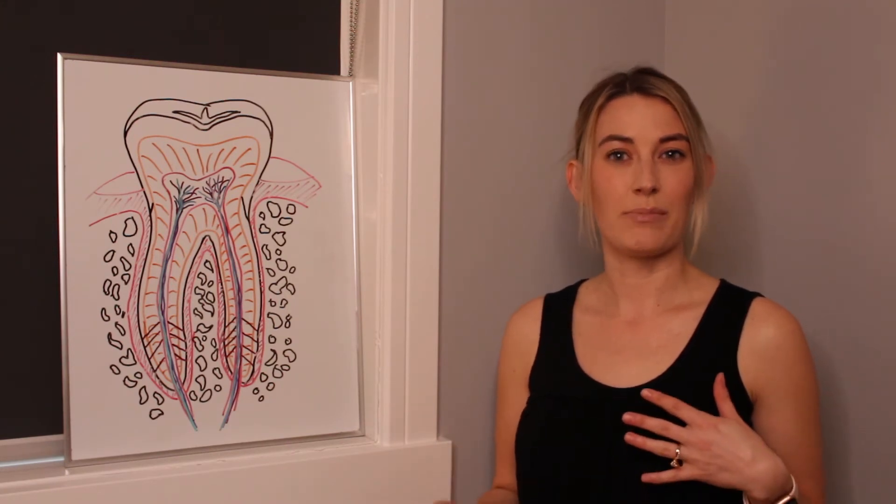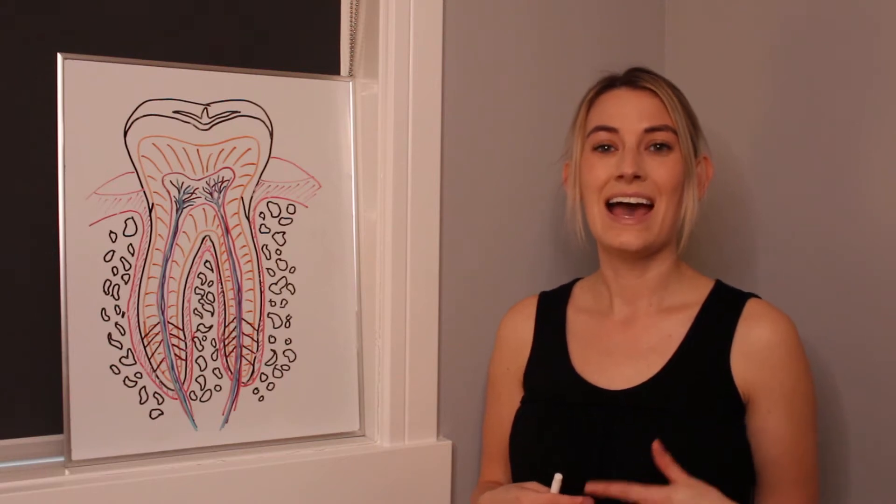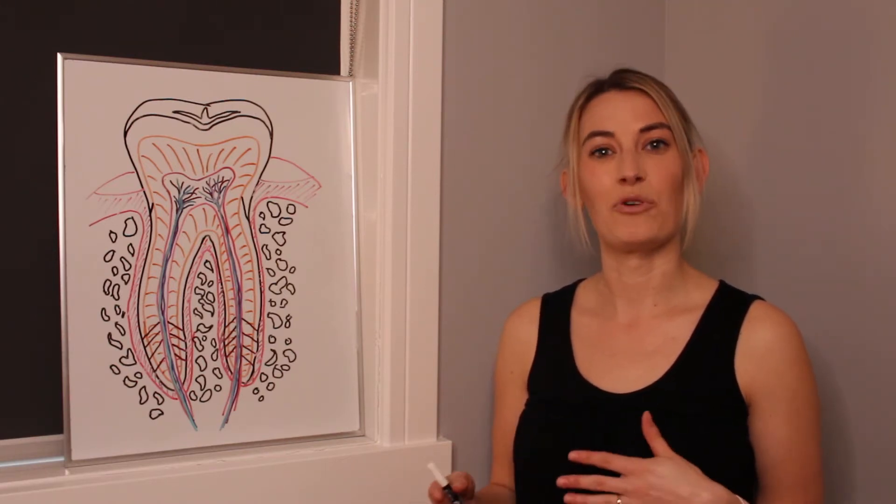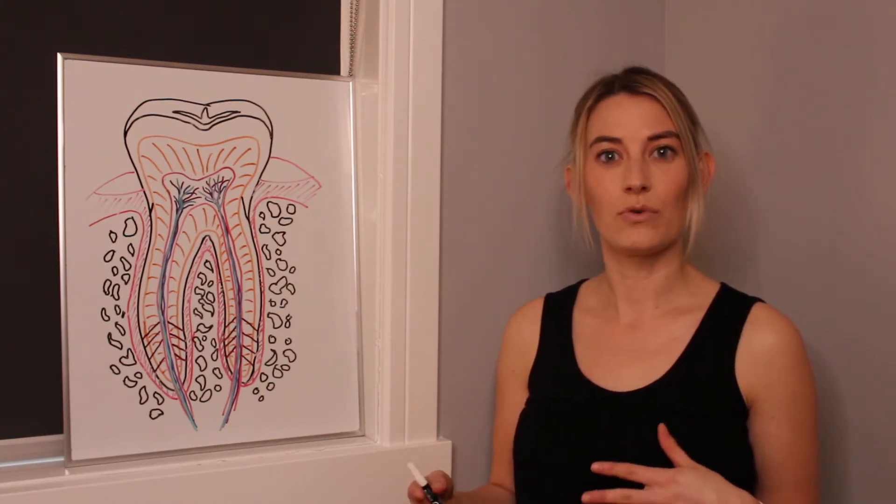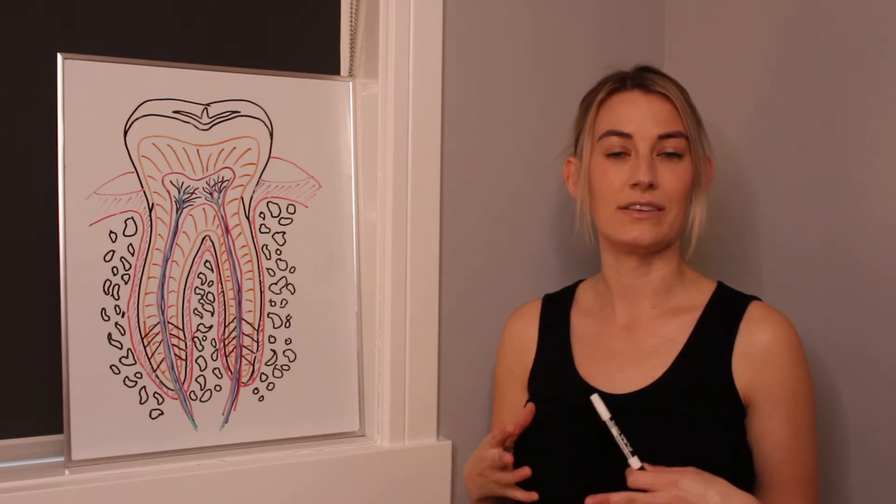It varies from person to person in thickness. So some people have thicker stronger enamel. Some people have a little thinner enamel and it is one of the things that actually changes the color of your teeth. So people can have more gray enamel or more yellow enamel or more white enamel. It just kind of fluctuates. So the outer hard portion of the tooth is called the enamel.